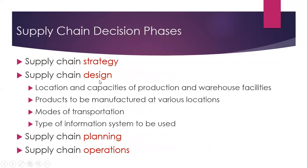The supply chain decision phases include: first, the strategy is identified which is best suitable for the firm. Then we design the supply chain, and these decisions include location and capacities of production and warehouse facilities, products to be manufactured at various locations, modes of transportation, and types of information systems to be used.